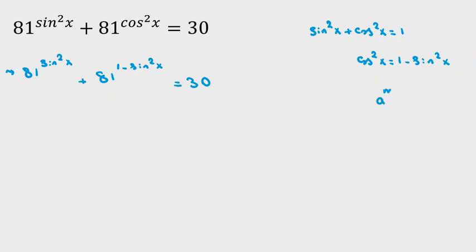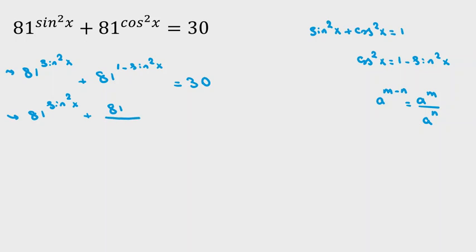Now by the power rule, we know a to the power of m minus n equals a to the m over a to the n. Applying this, we get 81 to the power of sine squared x plus 81 over 81 to the power of sine squared x, equal to 30.